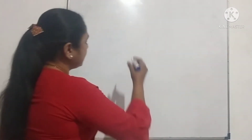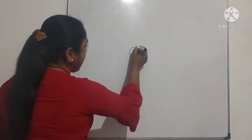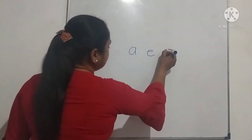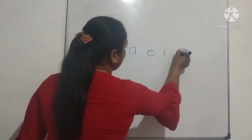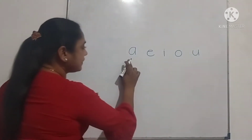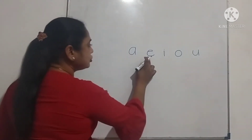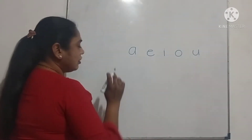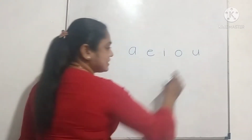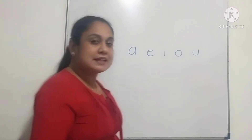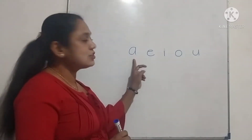Look at the word. A, A, E, O, A. How many letters are there? One, two, three, four, five. Now you know — these are vowels. They are vowels.